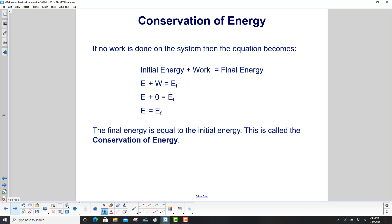What if no work is done on the system? So here's our equation in words. Here it is in letters. If no work is done, then work is equal to zero. So we have initial energy plus zero is final energy. Or the initial energy is equal to the final energy. That is now our conservation of energy.